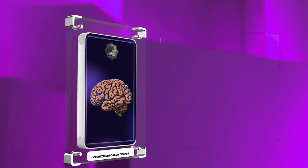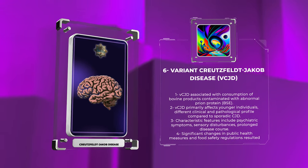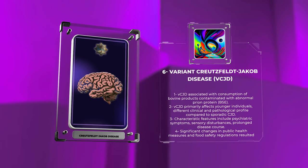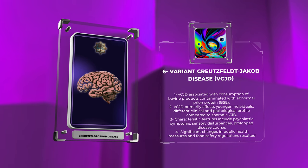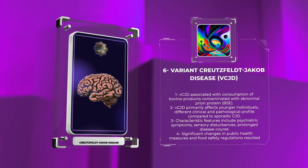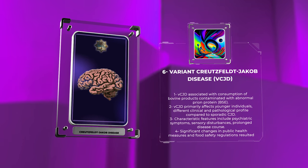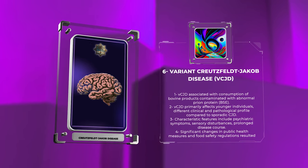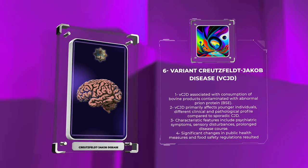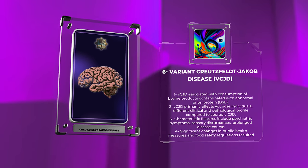Variant CJD (vCJD) is a distinct form of CJD that gained significant attention during the 1990s due to its association with the consumption of bovine products contaminated with the abnormal prion protein responsible for bovine spongiform encephalopathy (BSE), commonly known as mad cow disease. This variant form primarily affects younger individuals and exhibits a different clinical and pathological profile compared to sporadic CJD. The characteristic features of vCJD include psychiatric symptoms, prominent sensory disturbances, and a prolonged disease course. The link between vCJD and BSE raised concerns about potential zoonotic transmission and led to significant changes in public health measures and food safety regulations.